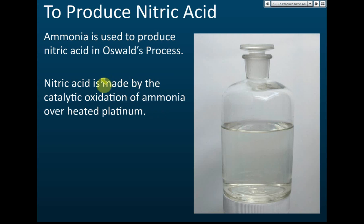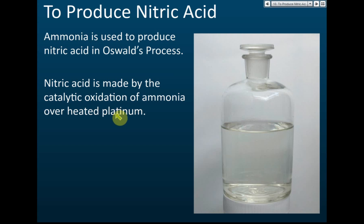In the Ostwald process, ammonia is heated with oxygen to produce nitric acid. You need to know that the name of this process is the Ostwald process and that the catalyst used is platinum. Nitric acid is very useful — it can be used to make fertilizers and also to make explosives like TNT. Ammonia can therefore be used to produce fertilizers and nitric acid.